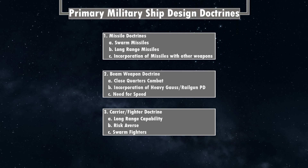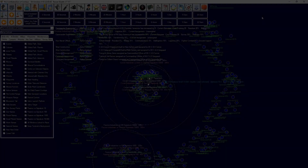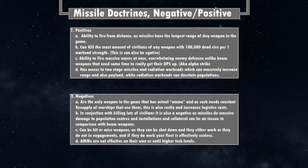Those are the main doctrines we're looking at today. Now let's discuss the positives and negatives of each. Missile doctrine positive A: ability to fire from distance, as missiles have the longest range of any weapon in the game. Beam weapons usually have a max range of about one million kilometers at the highest end, while missiles can go up to 80 million kilometers on ion tech — pretty insane ranges.